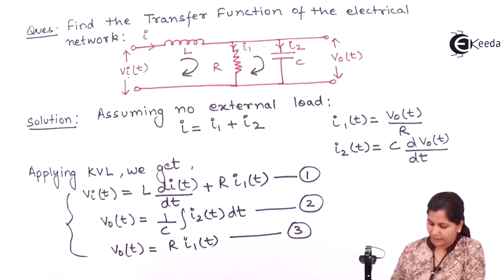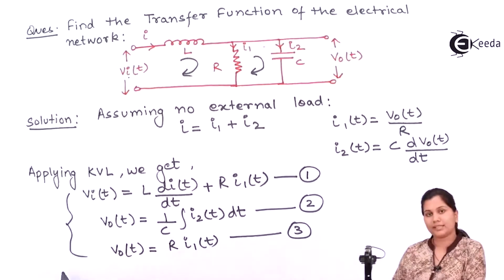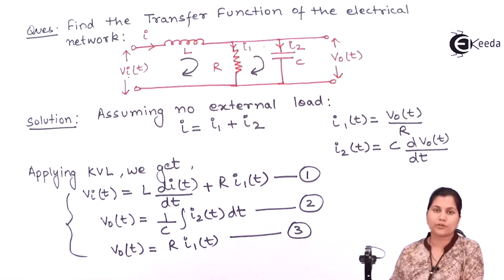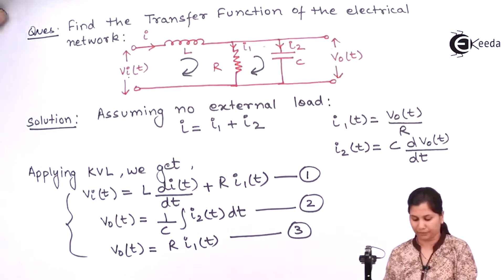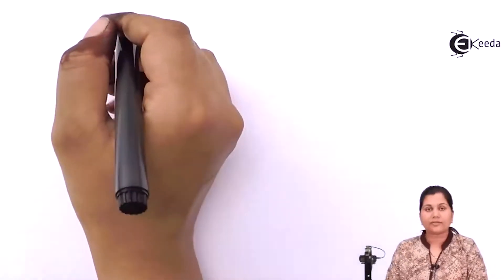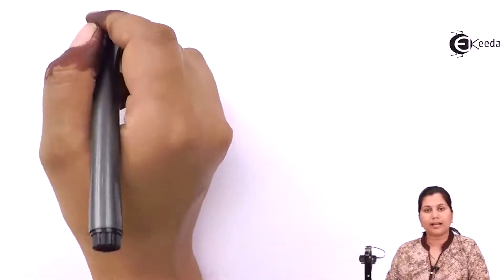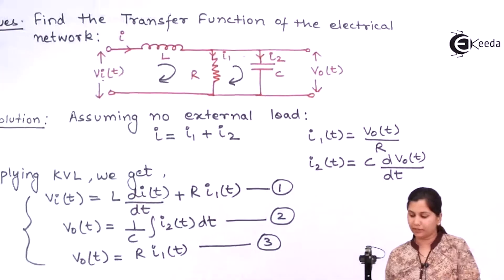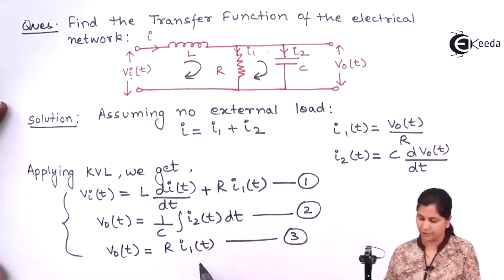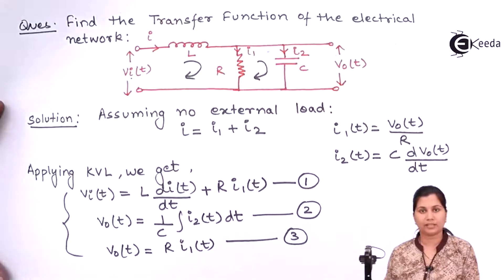So we have these three equations, and from these three equations we have to find out the ratio of the output voltage and the input voltage. First we will have to find out the Laplace transform of those three equations. So we have obtained the three equations — let's write the Laplace transform of each.